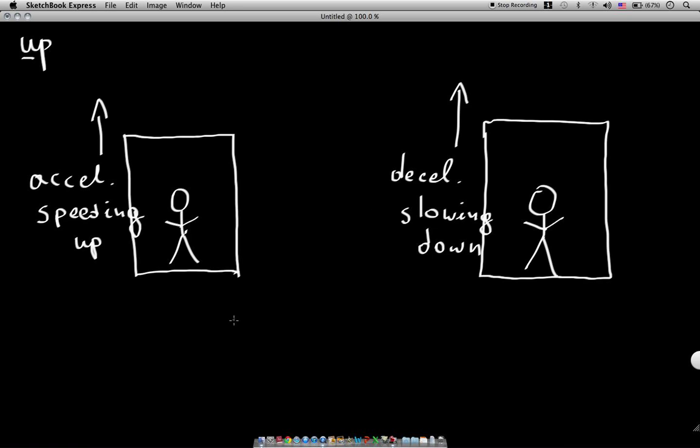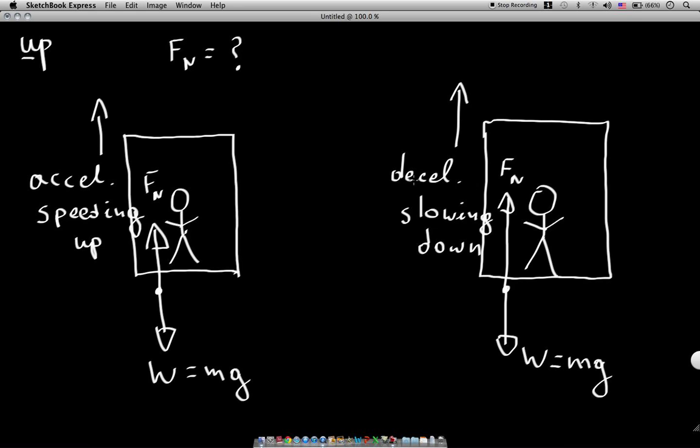From our class we know that if you're in an elevator you have some weight. I'm going to put weight W. Weight W is always down, and we also know that we have a force of normal, Fn, which is in the opposite direction from Newton's third law. Now, we know W is equal to m times g, so that's the same for both situations, either if you're speeding up or slowing down going up. We don't know what Fn is in both cases.